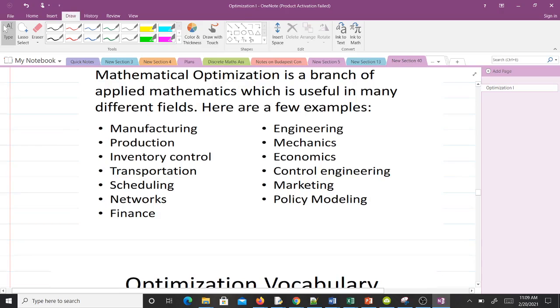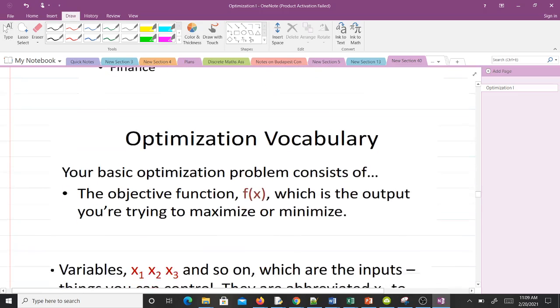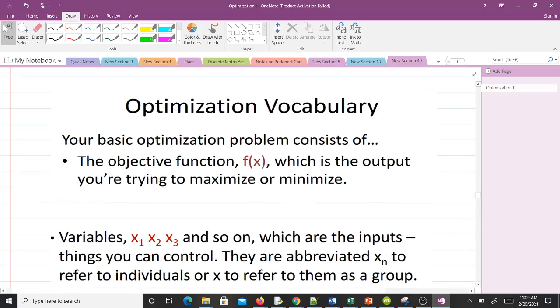Let's look at some vocabulary in optimization. Your basic optimization problem consists of what we call the objective function f(x). This is always the output you are trying to maximize or minimize. If they tell you to maximize or optimize something, that thing is what we call the objective function.